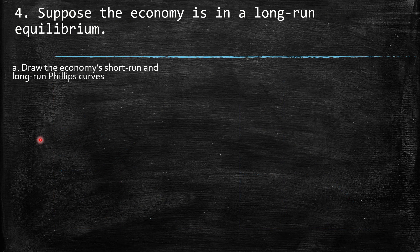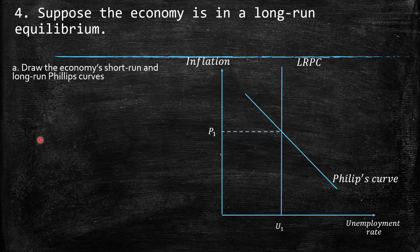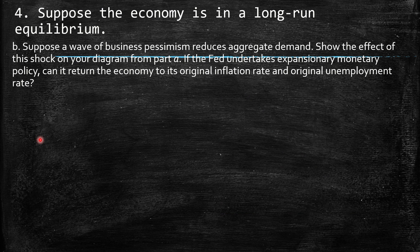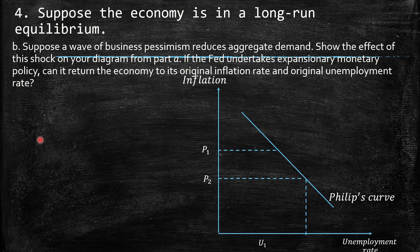Exercise 4: suppose the economy is in a long-run equilibrium. Draw the economy's short-run and long-run Phillips curves — we have the long-run Phillips curve with equilibrium shown. Part a: suppose a wave of business pessimism reduces aggregate demand. If the Fed undertakes expansionary monetary policy, can it return the economy to its original inflation rate and original employment rate? Yes — when we have a decrease in prices due to the decrease in aggregate demand, we end up at P2 and EU2. With expansionary monetary policy recovering aggregate demand, we can reach again P1 and EU1.